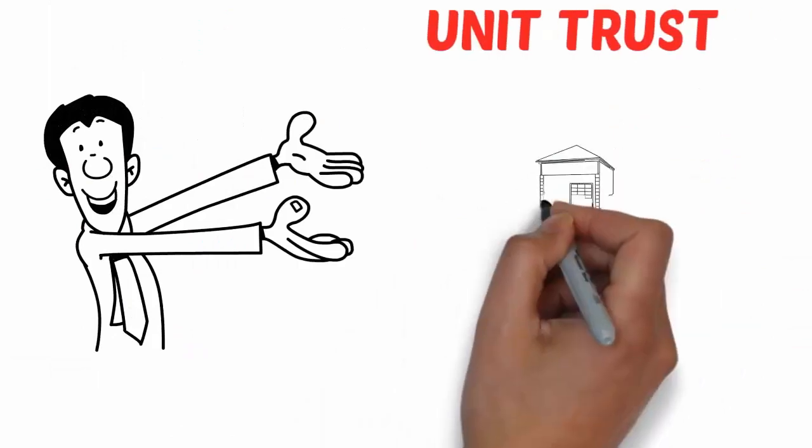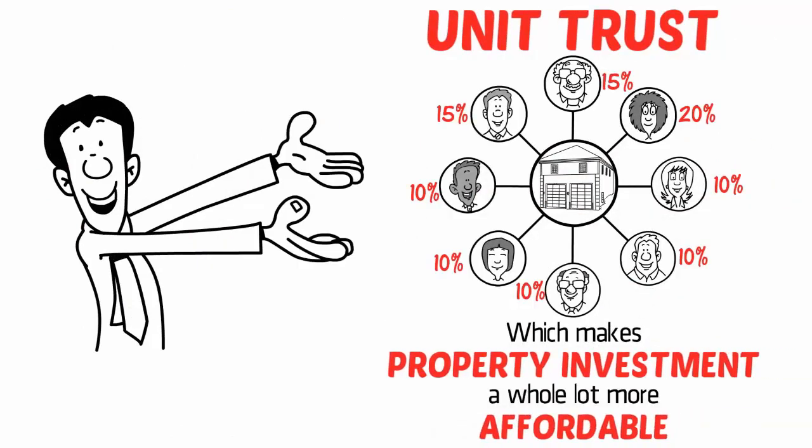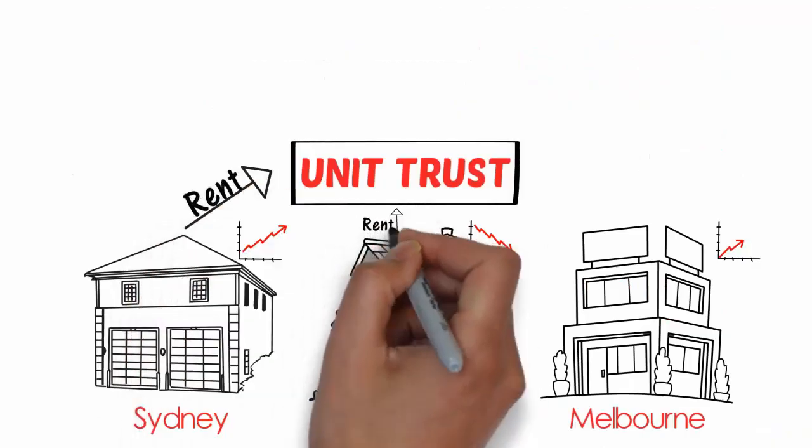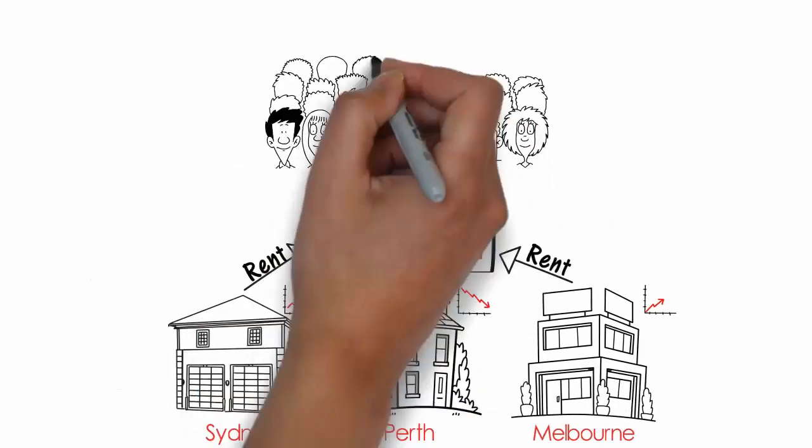Through a unit trust, you share in these expenses, which makes property investment a whole lot more affordable. The unit trust receives the rent from the properties within the trust and pays this rent after expenses back to the investors.